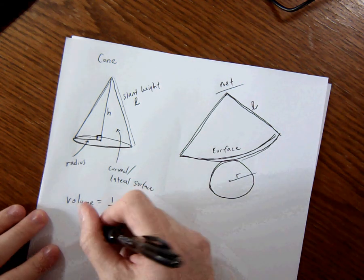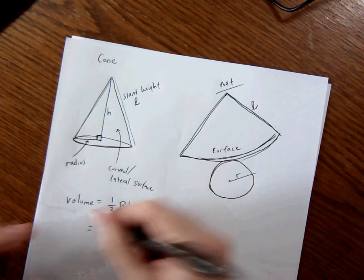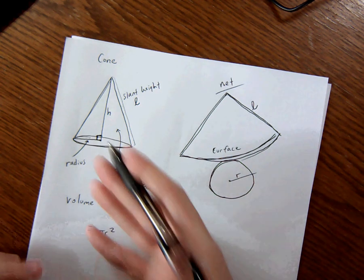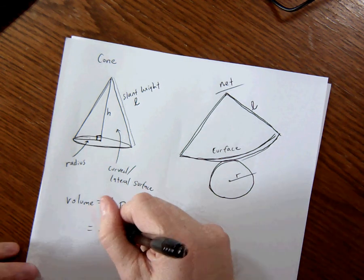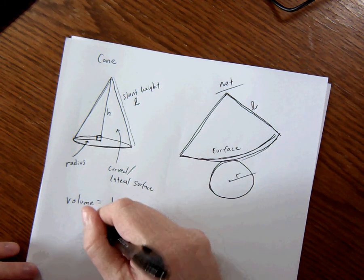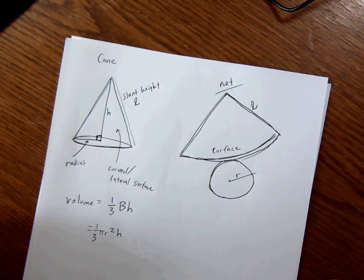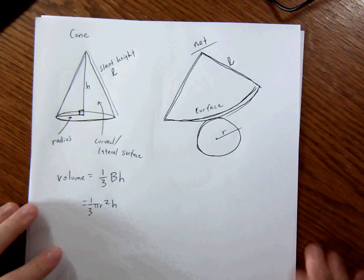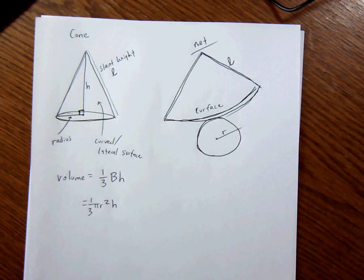So this is, the base is pi r squared, which is the area of a circle, times the height, and notice that's height, not L, height, times one third. So one third pi r squared H. That's the volume. Sorry, it's sideways. I didn't notice. So one third pi r squared H is the volume of a cone.